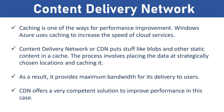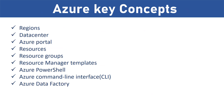Caching is one of the ways to improve performance; Windows Azure uses caching to increase the speed of cloud services. Content Delivery Network (CDN) puts content like blobs and other static content in a cache. The process involves placing data at strategically chosen locations and caching it, providing maximum bandwidth for delivery to users. If an application source is far from the end user, the CDN offers a competent solution to improve performance and scale instant high loads efficiently.